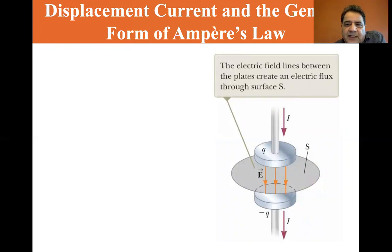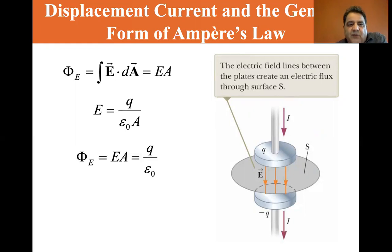So you have the electric field lines between the plates. There's no current, but there's an electric field between the plates. It creates an electric flux through the surface S. So the electric flux is integral of E dot dA, where dA is the area. So it equals E times A. And that E equals the charge divided by the permittivity divided by the area. So phi equals EA equals the charge divided by permittivity.